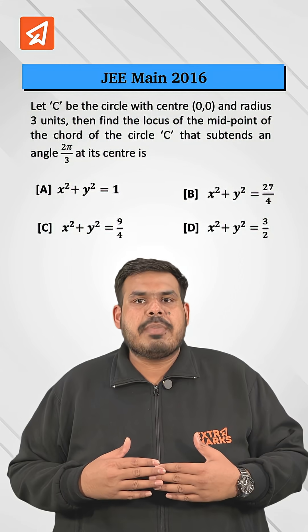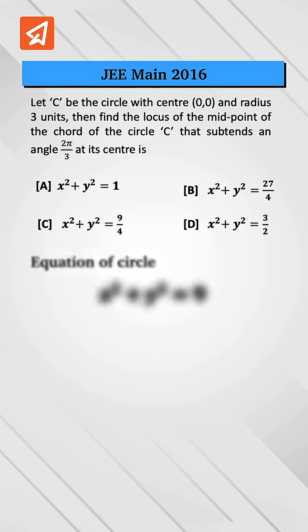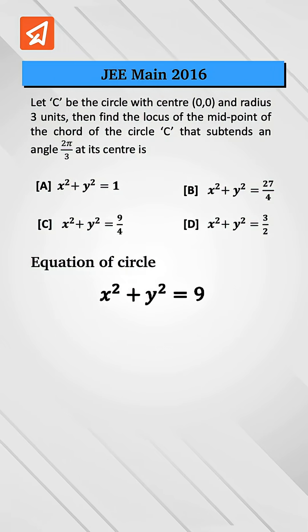Now let's see this question from JEE Main 2016. Given a circle with center at origin, radius 3 units and angle subtended is 2π/3.